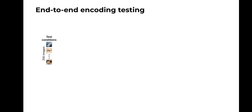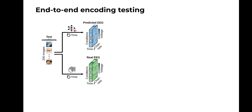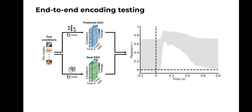Once our encoding models were trained, we evaluated them using the test data split. We fed the test images to the trained AlexNet encoding models and predicted the corresponding EEG responses. We then took the real EEG responses to the same test images recorded during our experiment and compared the similarity of the two data instances through a Pearson's correlation. In this graph, the y-axis indicates the correlation score between real and predicted EEG data, the x-axis indicates the temporal development before and after time zero — when a given image appeared on screen — and the gray region represents the noise ceiling lower and upper bounds, indicating the theoretical maximum correlation given the noise in the EEG data.